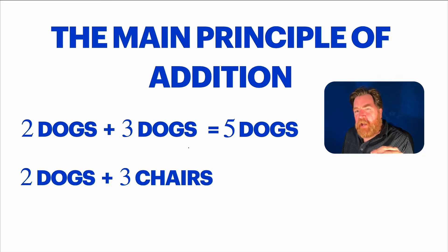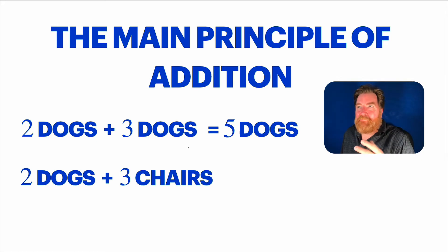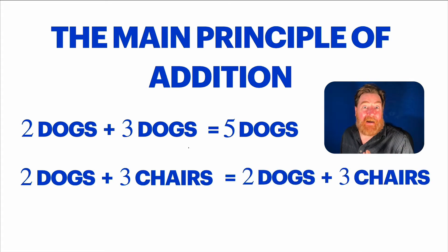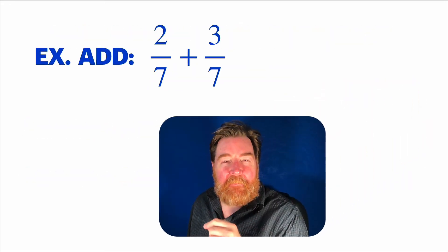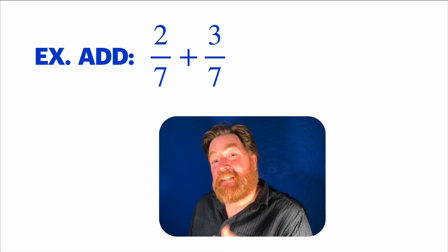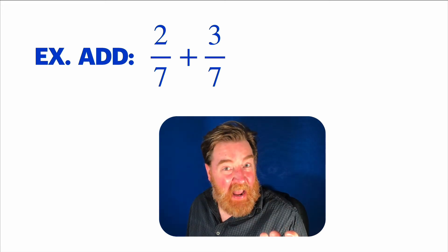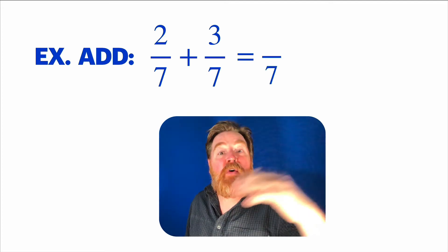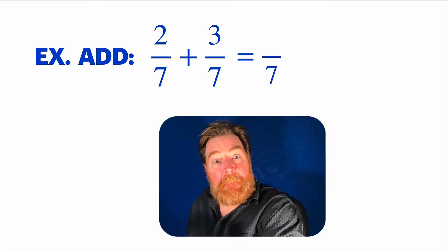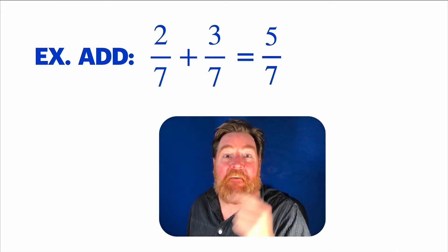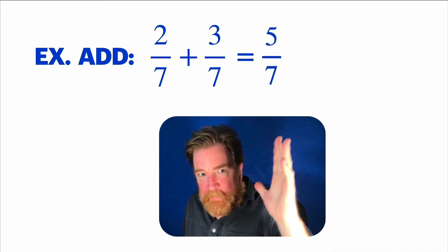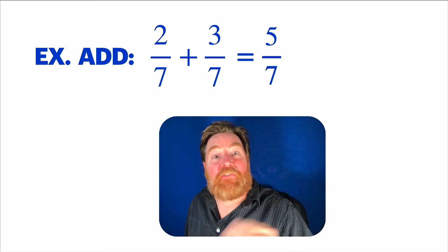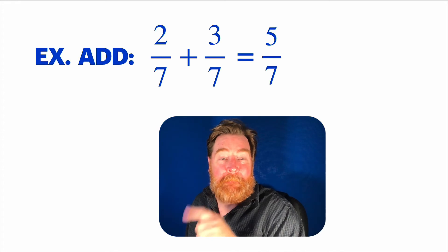Now if you had two dogs plus three chairs, those are not the same thing, so we can't add them — we can't combine them. How about two sevens plus three sevens? You can add them because they're both sevens, and when you add them you're going to get sevens. Two of them plus three of them — still five of them. Five sevens. That's why we don't add the denominator: those are the things. When you add the same things, you get the same things.